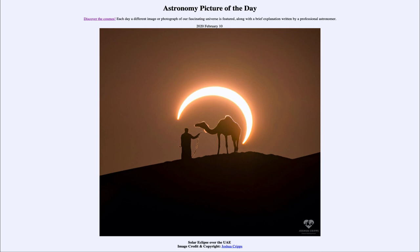An eclipse occurs when the moon passes in front of the sun — that is what we call a solar eclipse. When that happens, people on the earth in the right location will be able to see an eclipse. Eclipses come in different varieties: there are partial eclipses, where just part of the sun is blocked out by the moon. Right now in this image, this is a partial eclipse.